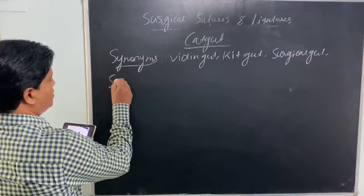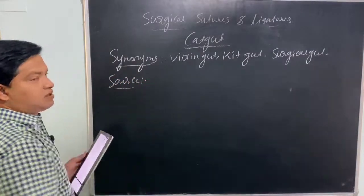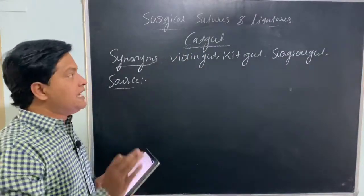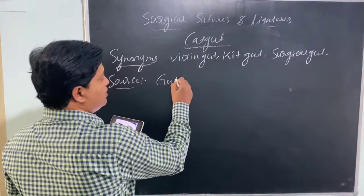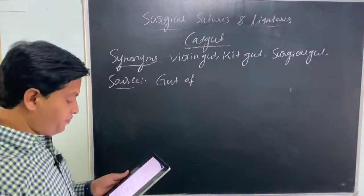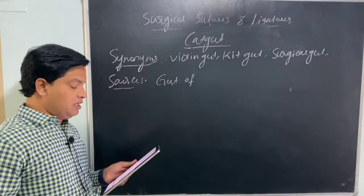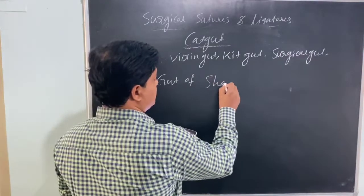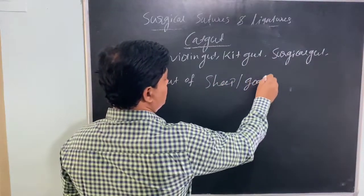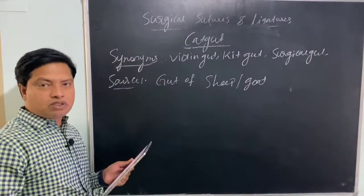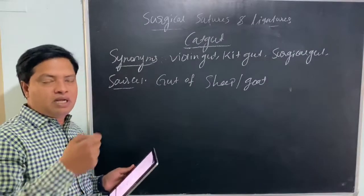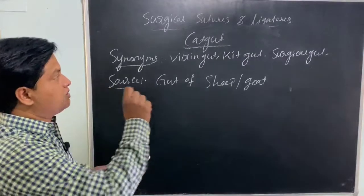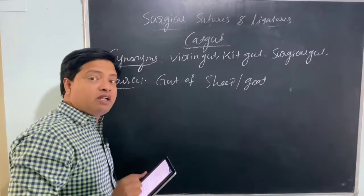What are the sources of catgut? Remember, despite the name 'catgut,' it is not taken from the gut of a cat. It is taken from the small intestine of sheep or goat — specifically the submucosal layer of the small intestine of healthy sheep or goat, which contains collagen fiber.